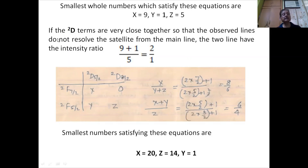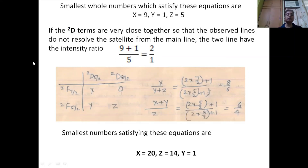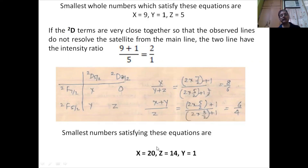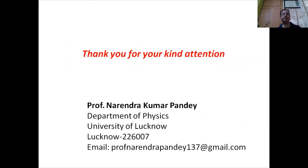Similarly, for the doublet D term, the two lines have an intensity ratio of 2:1. For doublet F and doublet D transitions, solving in the same way gives x = 20, z = 14, y = 1. The satellite line may merge with either of the two main lines to give an intensity of approximately 4:3. Thank you very much for your kind attention.